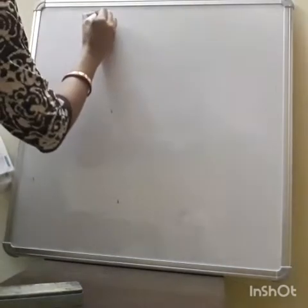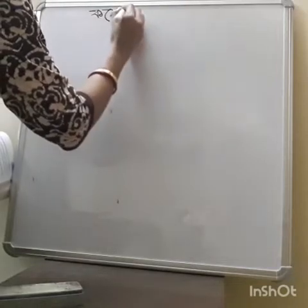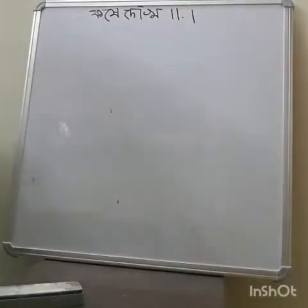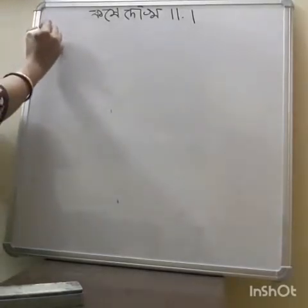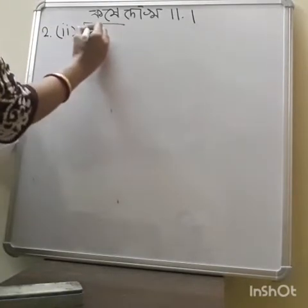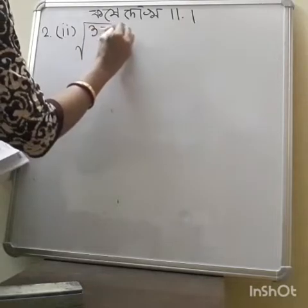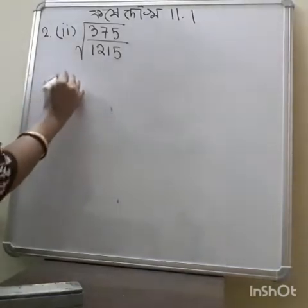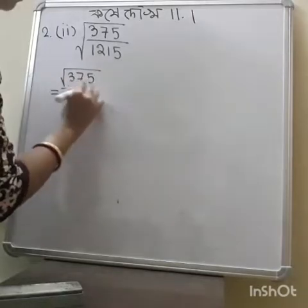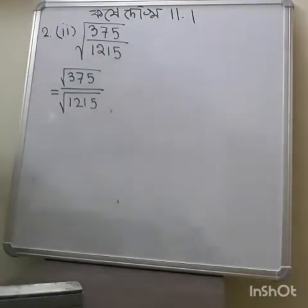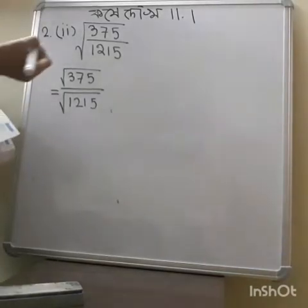11.1 — root over 375 divided by 1215. This is equal to root over 375 divided by root over 1215. Now 375 and 1215 are not perfect squares, so they cannot be square-rooted directly. For this reason, we need to simplify — the common factors need to be cancelled out first.